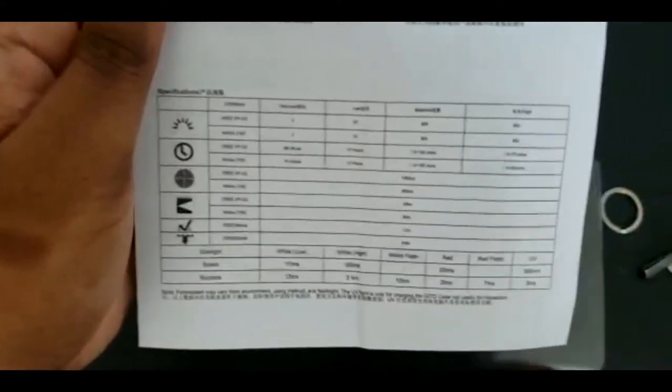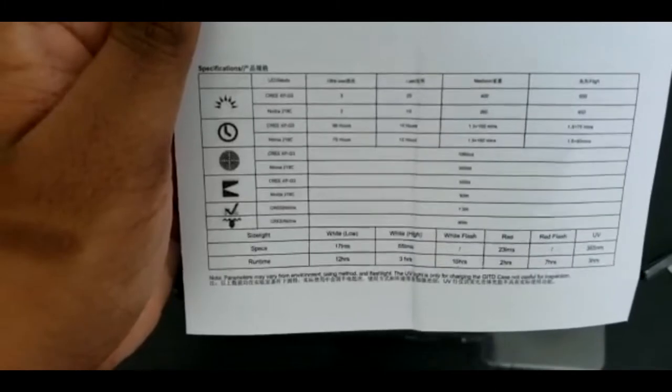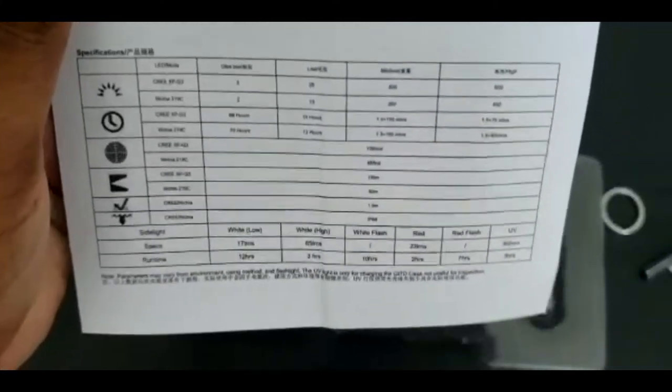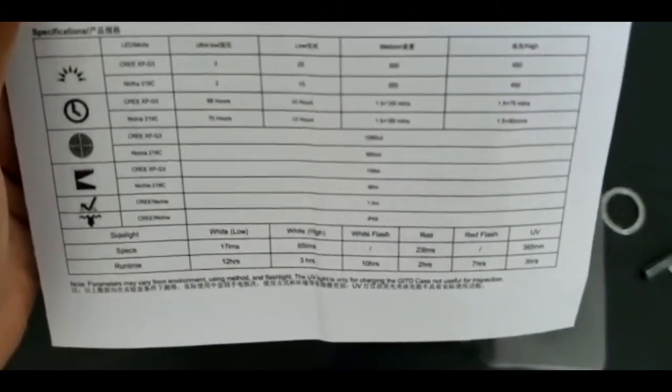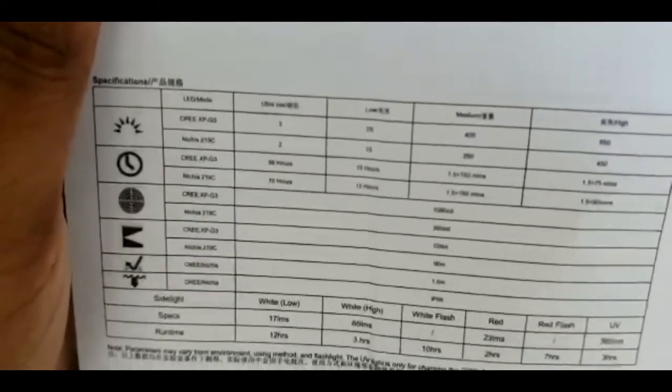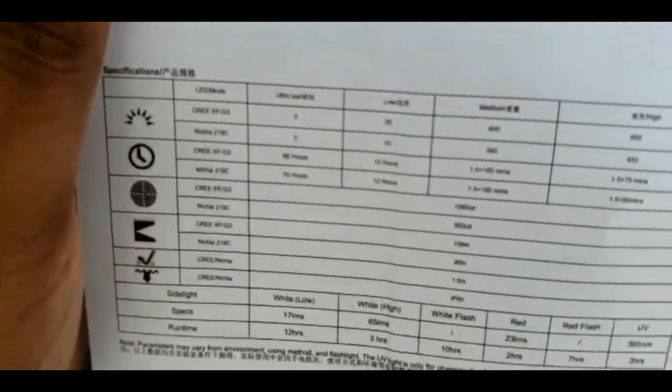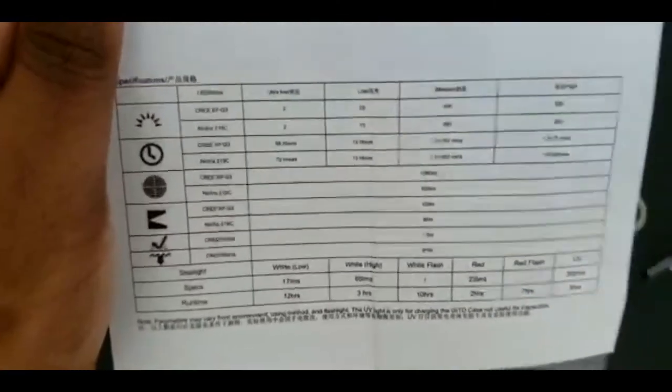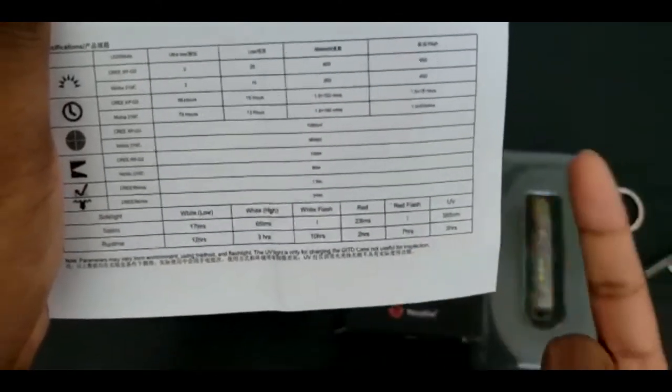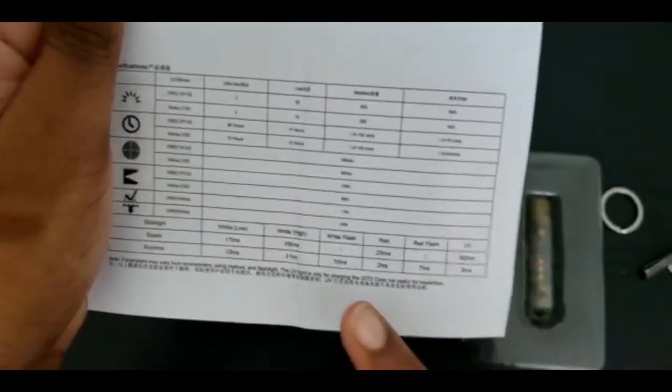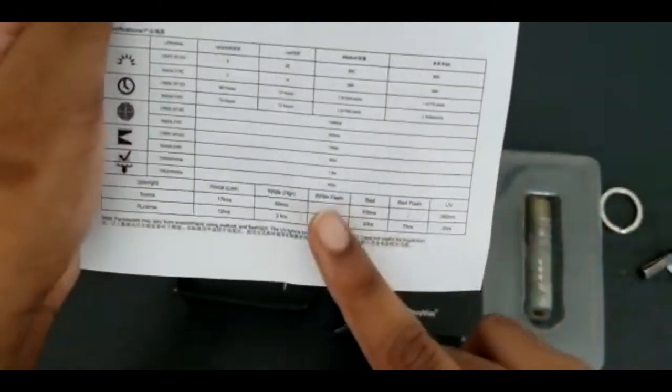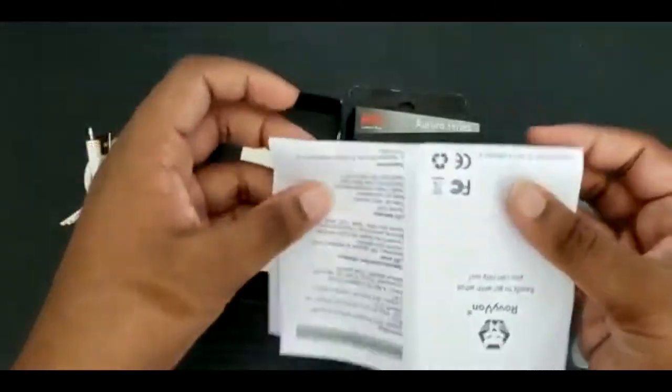Let's go to the chart. This has the run times: 66 hours for ultra low, 10 hours for low, 150 minutes for medium, and 75 minutes for high. If you get the Nichia you get higher quality and more run time. White on low on the side lights is 12 hours, white on high is 3 hours, white flashing 10 hours, red 2 hours, red flash 7 hours, UV 3 hours. The UV and white high drain this a lot.